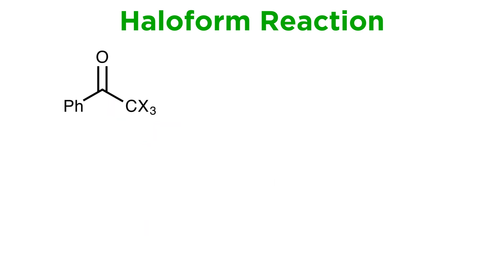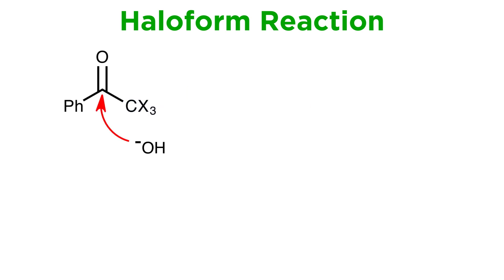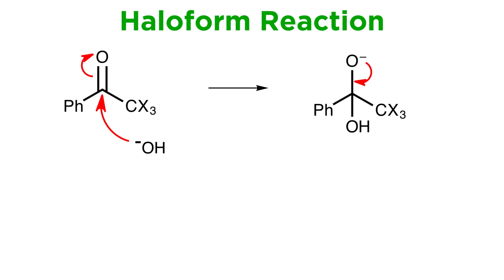Now the interesting thing about this structure is that the trihalomethyl anion is actually a good leaving group, because the resulting negative charge on the carbon is stabilized via induction by the three neighboring halogens. Since we have still more base lying around, this means that hydroxide can attack the carbonyl, kick that pi bond up, which will then come back down to reform the carbonyl and kick off the trihalomethyl anion.